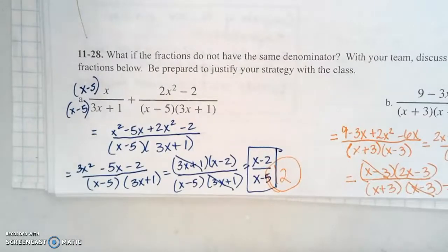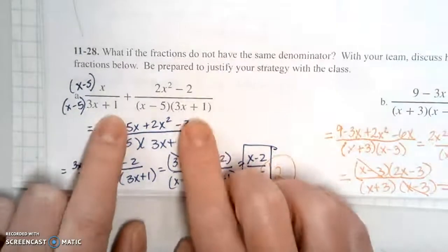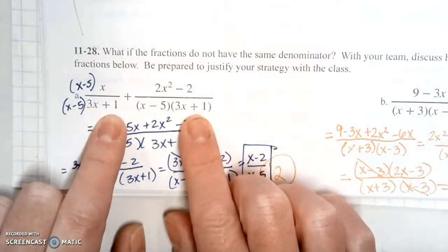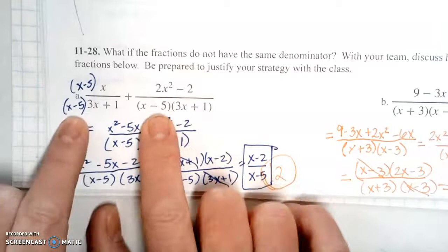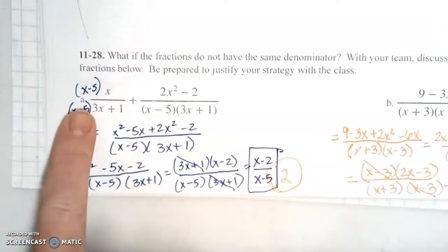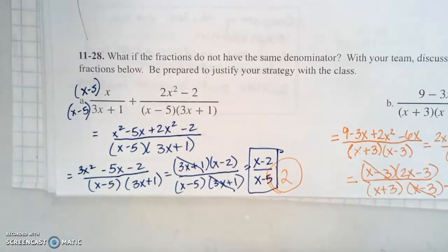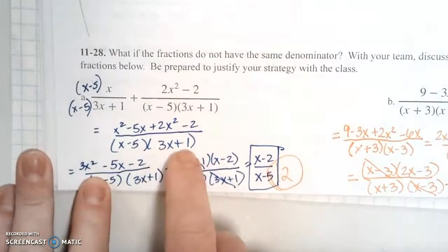On this one the denominators are already factored. We have a 3x plus 1 on this one, and then an x minus 5 and a 3x plus 1 on this one. They both already have the 3x plus 1, so that's good, but they don't both have the x minus 5. So we need to multiply the first expression by x minus 5 over x minus 5 to get that common denominator.